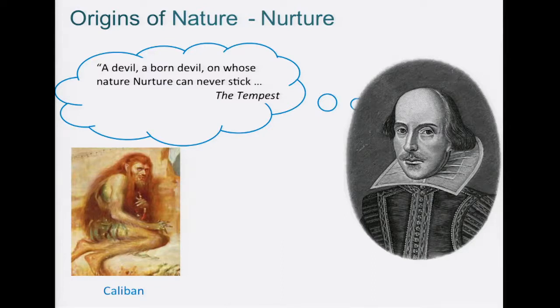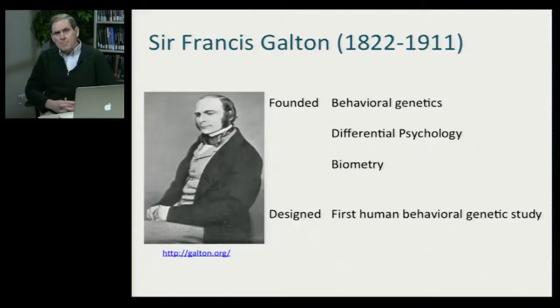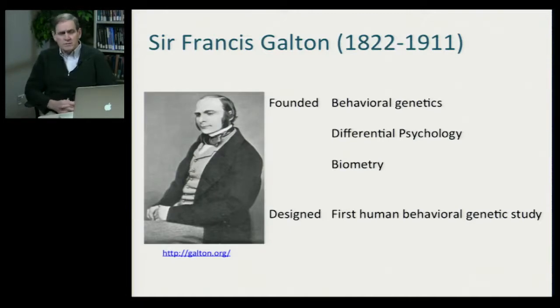While Shakespeare may have been the first to use the felicitous terms nature and nurture to describe the essence of the debate as to the origins of individual differences among us, the nature-nurture debate is most strongly identified with Sir Francis Galton, who lived in the 19th and early 20th century. Galton was Darwin's, Charles Darwin's, first cousin — a brilliant man, a polymath by any definition of that term.